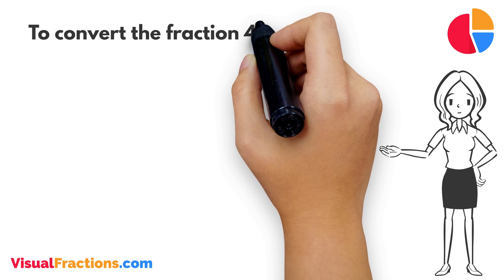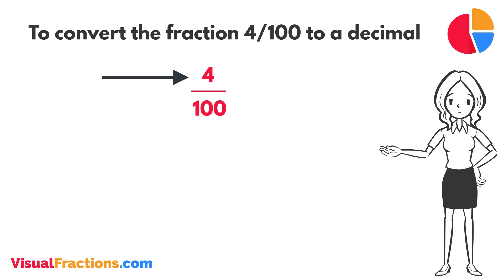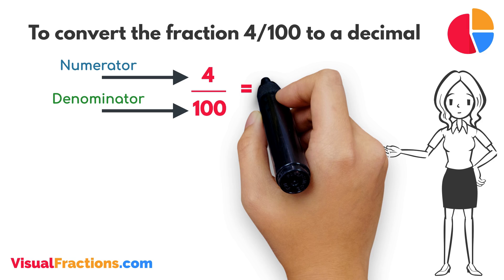To convert the fraction 4 one-hundredths to a decimal, all we need to do is divide the numerator, the top number, by the denominator, the bottom number. So, we simply divide 4 by 100. The answer we get is 0.04.